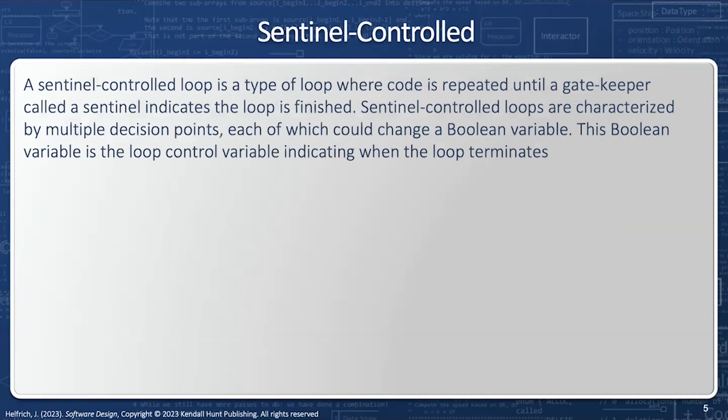The next is a sentinel control loop, and perhaps this is the most difficult one to understand. This is for more complicated scenarios when a variety of different types of events could change the loop characteristics.